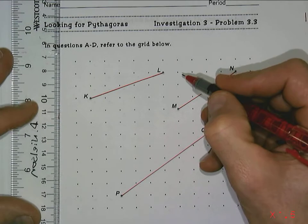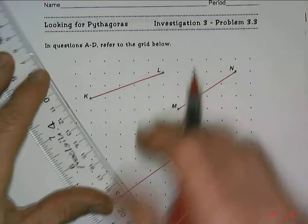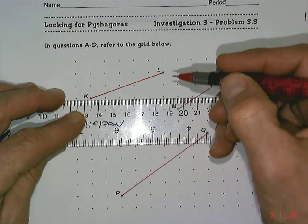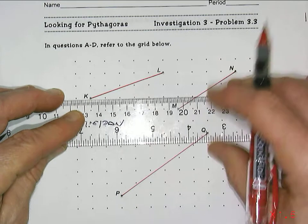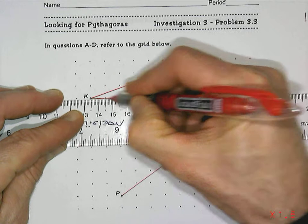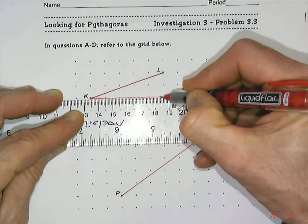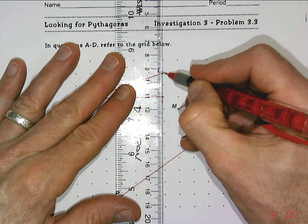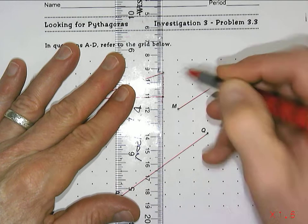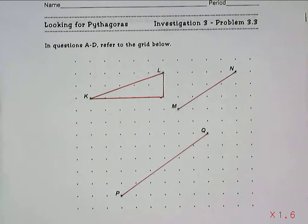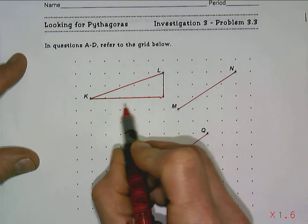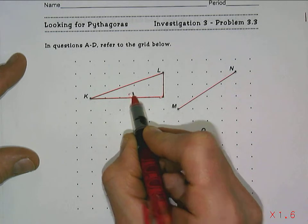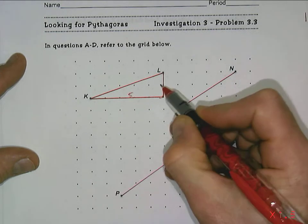Anytime I have a line segment, I want to turn it into a right triangle. So if I look at this k to l and think of it as a right triangle, I really don't need to draw squares anymore — I just need to know the side lengths. So counting along: 1, 2, 3, 4, 5 is one side length, and 2 is the other side length.